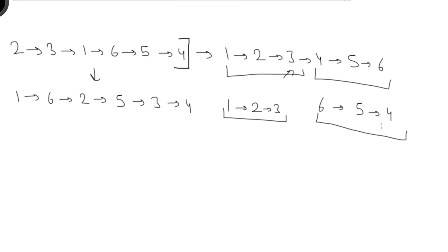So the first list is 1, 2, 3 and the second list is 6, 5, 4. Now what we do is alternatively take elements — first from the first list then from the second list, one by one — to build the final list. We take a dummy node to help adjust the pointer, and we'll remove it at the end.